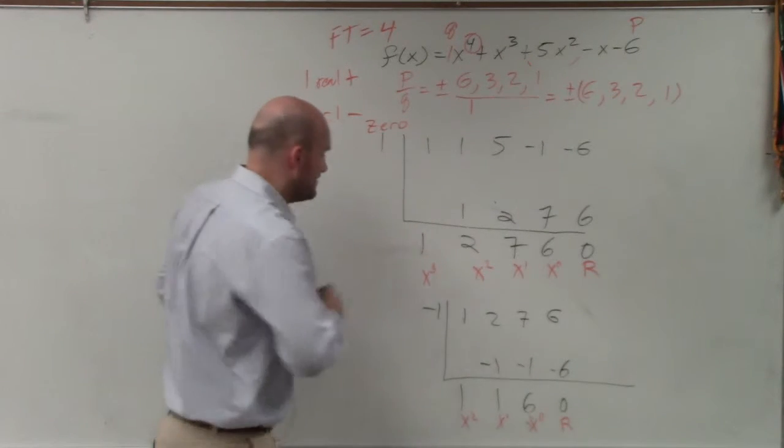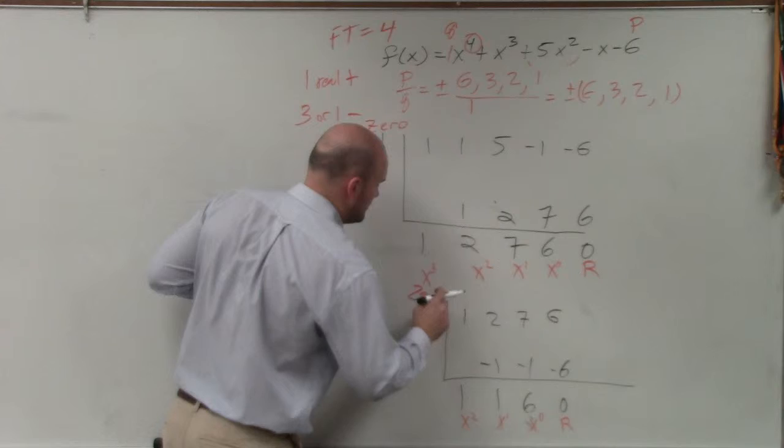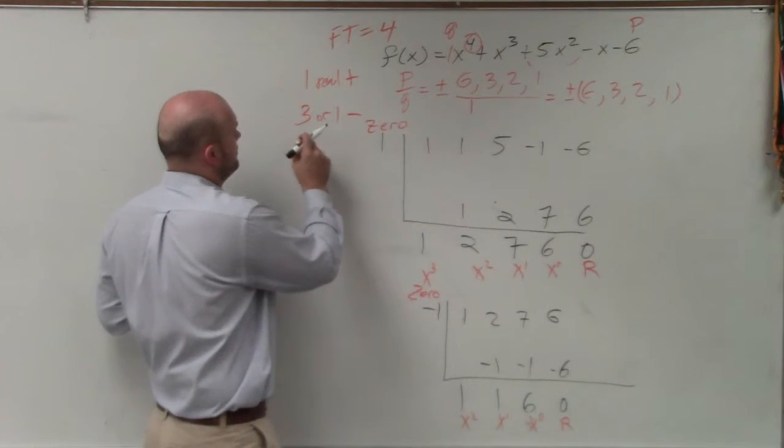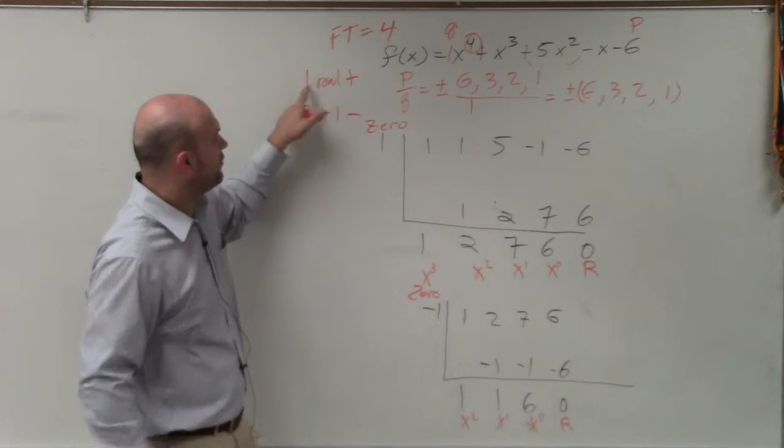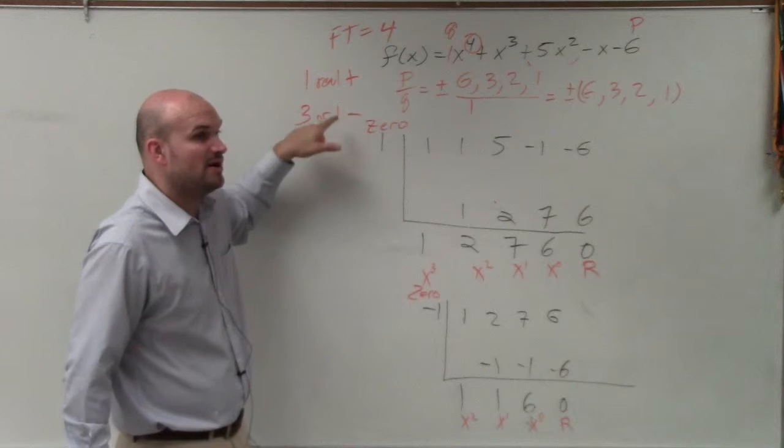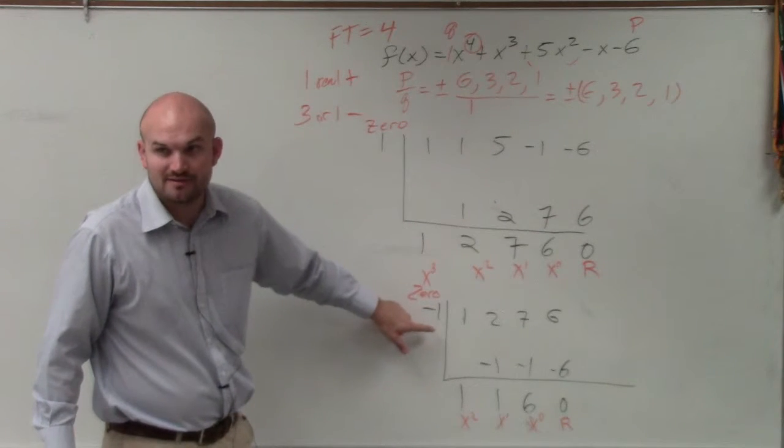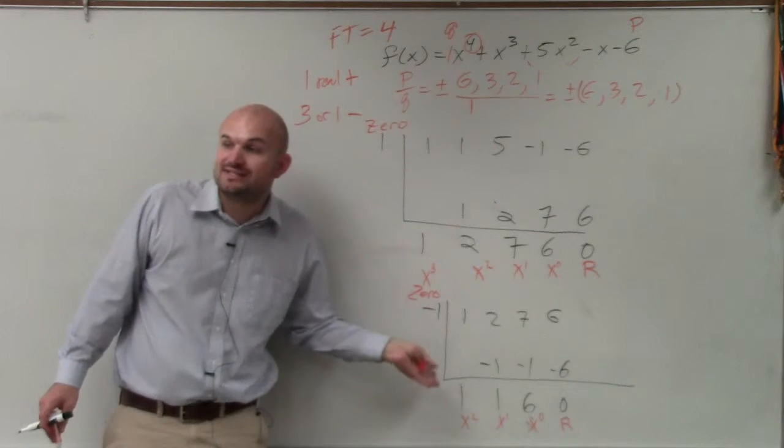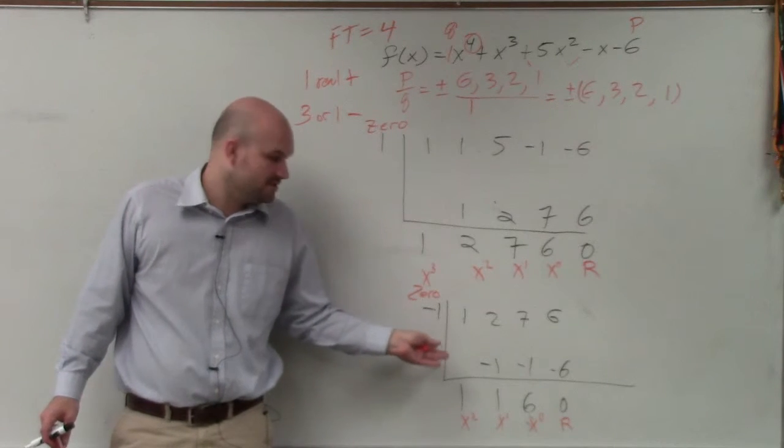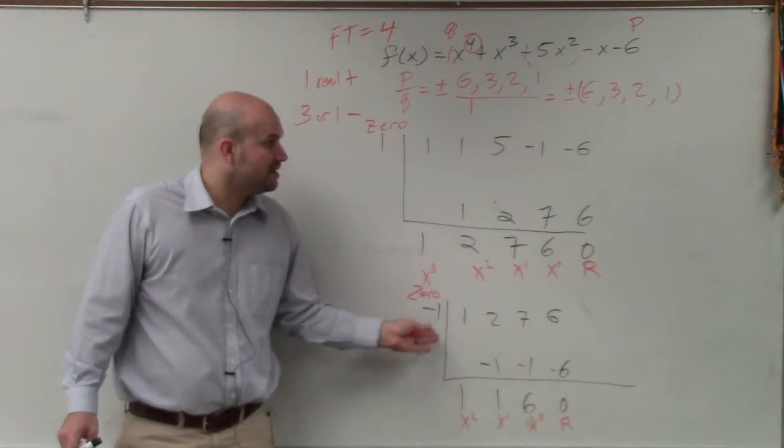So I have two 0's. Ladies and gentlemen, are we following what we said? We said there's either one real, one real positive, and we said there has to be at least one real negative. Do you see we have a negative? Right? And again, if x minus 1 is the 0, what's the factor? x plus 1. Good.